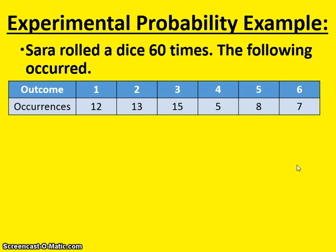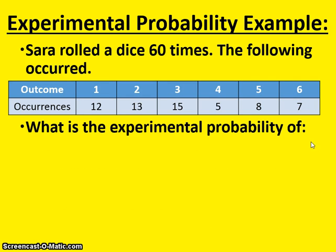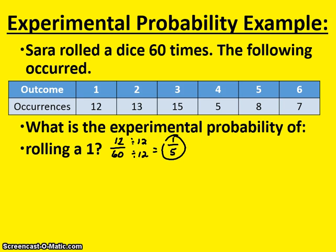So let's do an experimental probability example. Sarah rolled a dice 60 times. The following occurred: she got a 1 twelve times, a 2 thirteen times, a 3 fifteen times, a 4 five times, a 5 eight times, and a 6 seven times. So what is the experimental probability of rolling a 1? Well, how many times did Sarah get a 1? Sarah got a 1 twelve times out of 60. If you reduce that, which they both divide by 12, you get 1/5. There's a 1 in 5 chance of rolling a 1, and you could convert that to a decimal or percent if you wanted to.